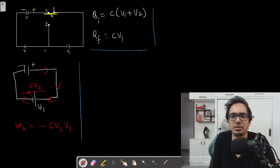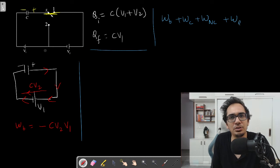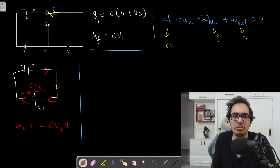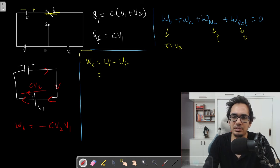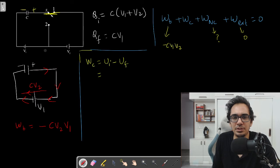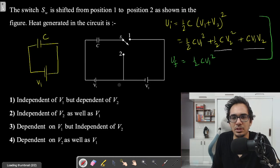Using the work-energy theorem: work done by battery + work done by conservative forces + work done by non-conservative forces + work done by external forces = 0. There is no external force (we are not moving the plates), so that term is zero. Work done by battery is −CV1V2. Work done by conservative forces equals initial energy minus final energy, which is ½CV2² + CV1V2.